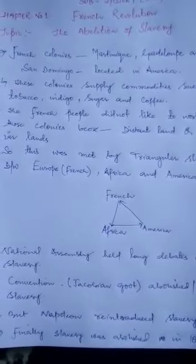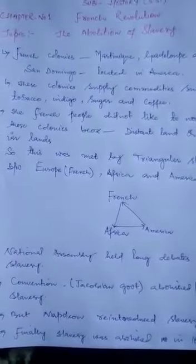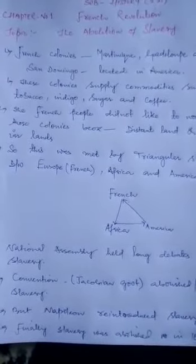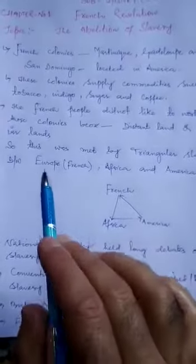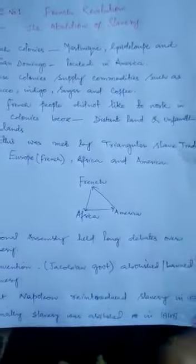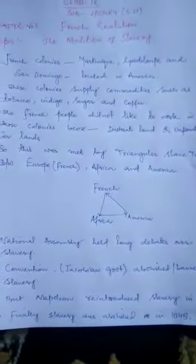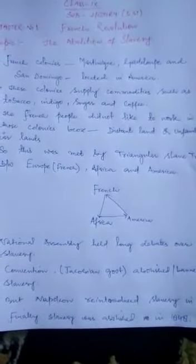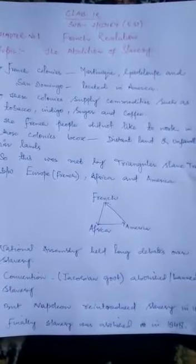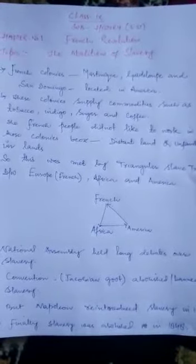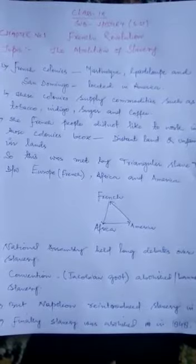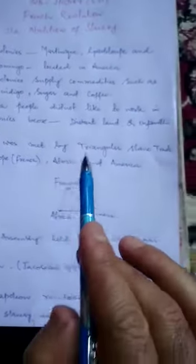چونکہ ان کالنیز میں یہ چیزیں cultivate کرنے کے لیے labor class چاہیے، ان کو slaves چاہیے، جو ان plantation gardens میں کام کر کے یہ commodities تیار کریں. This shortage of labor was met by the triangular slave trade. جب France کے اپنے لوگ وہاں جانے کے لیے تیار نہیں تھے، تو یہ shortage of labor triangular slave trade سے پوری کی گئی.